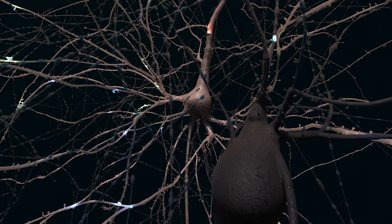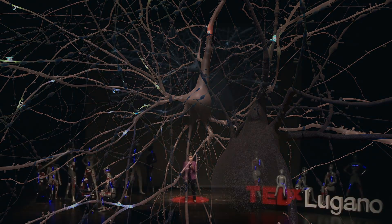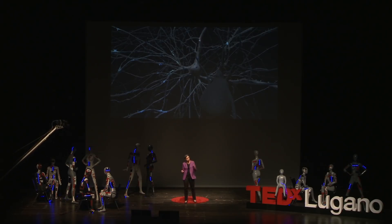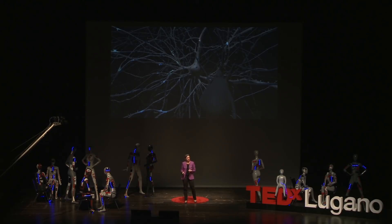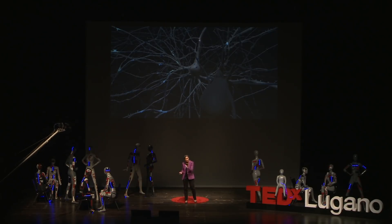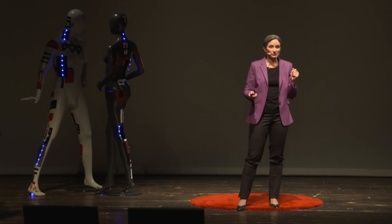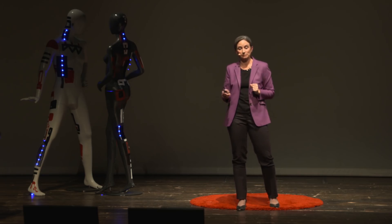The blobs you see are the somas or cell bodies of the neurons, which are the primary processing units. The tendrils are the axons and dendrites — the communication wires. Signal flows through a neuron from its dendrites into the soma and then out through the axon. The bright spots are the synapses — touch points between the axon of one neuron and the dendrite of the next — where electrical activity happens. Synapses act as valves: electricity flows in one direction from the axon of the presynaptic neuron to the dendrite of the postsynaptic neuron.